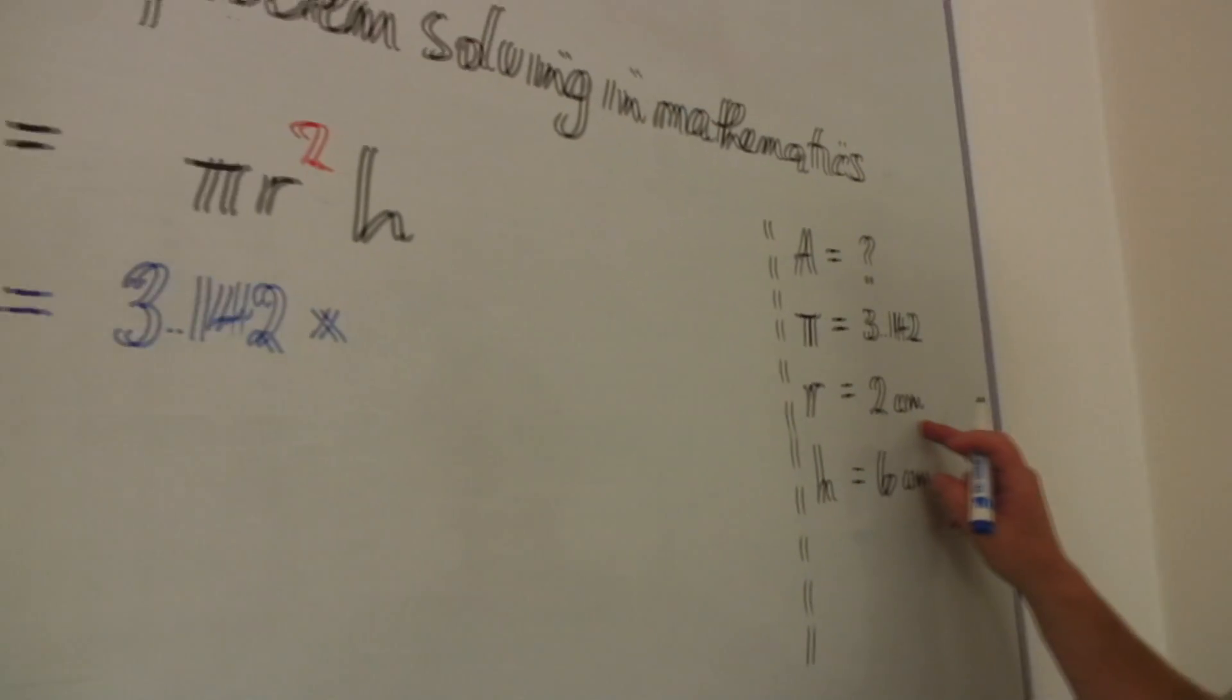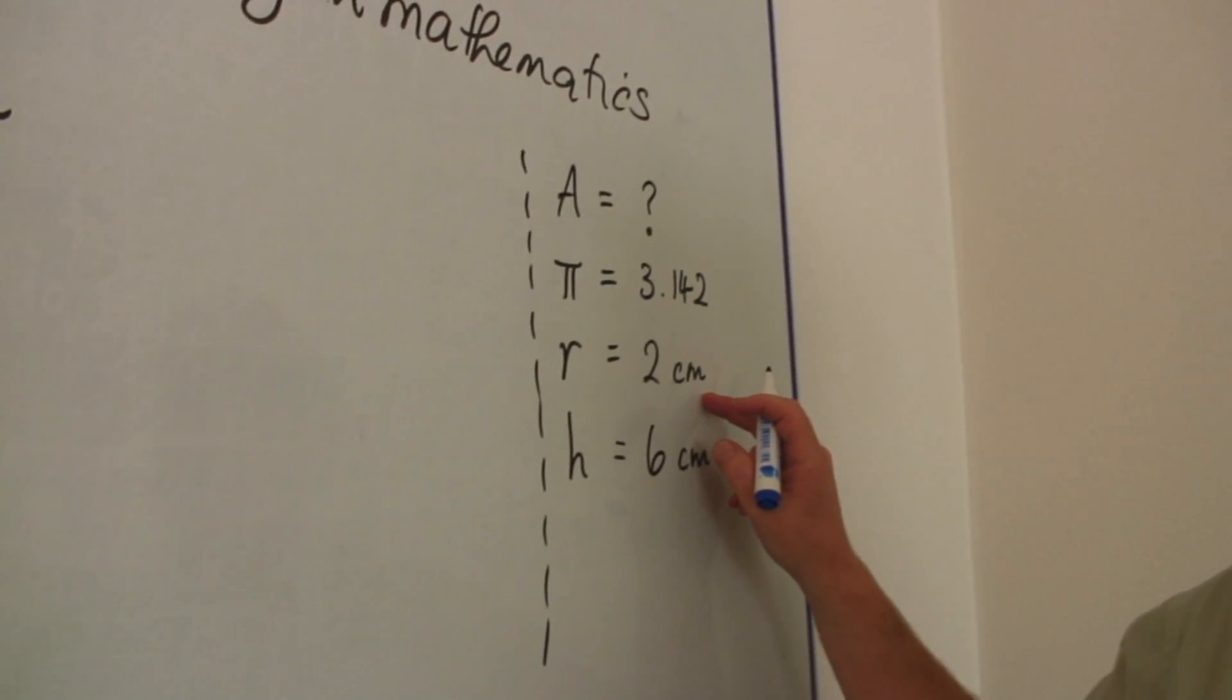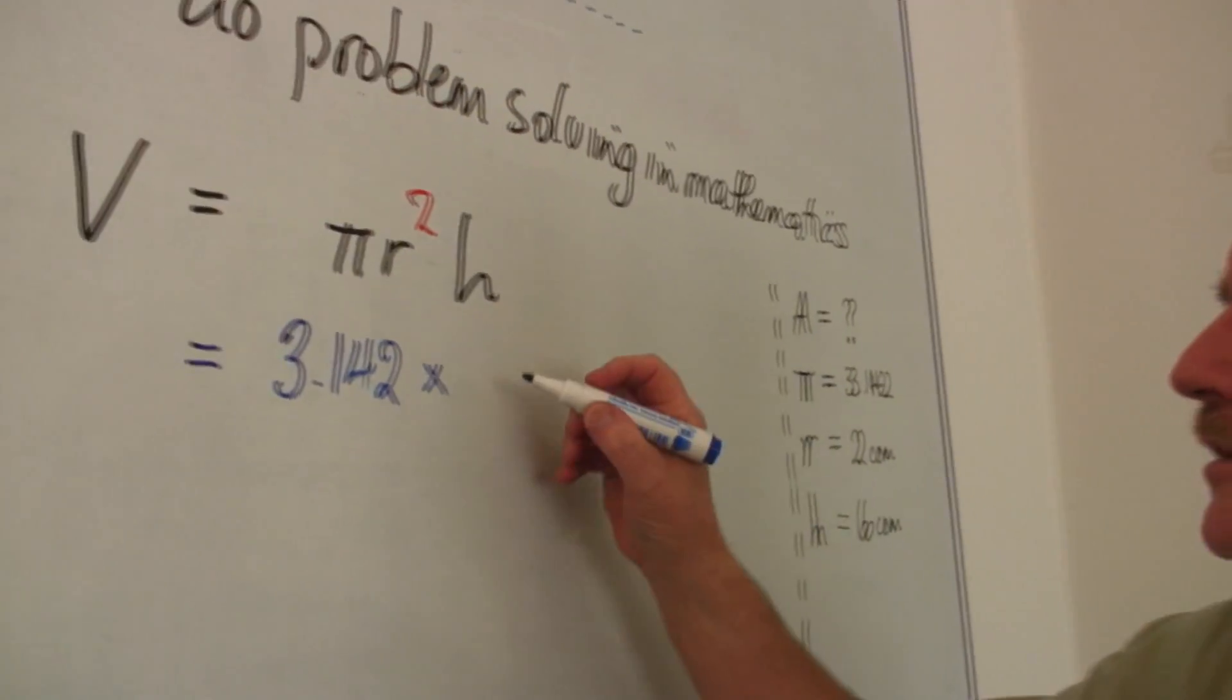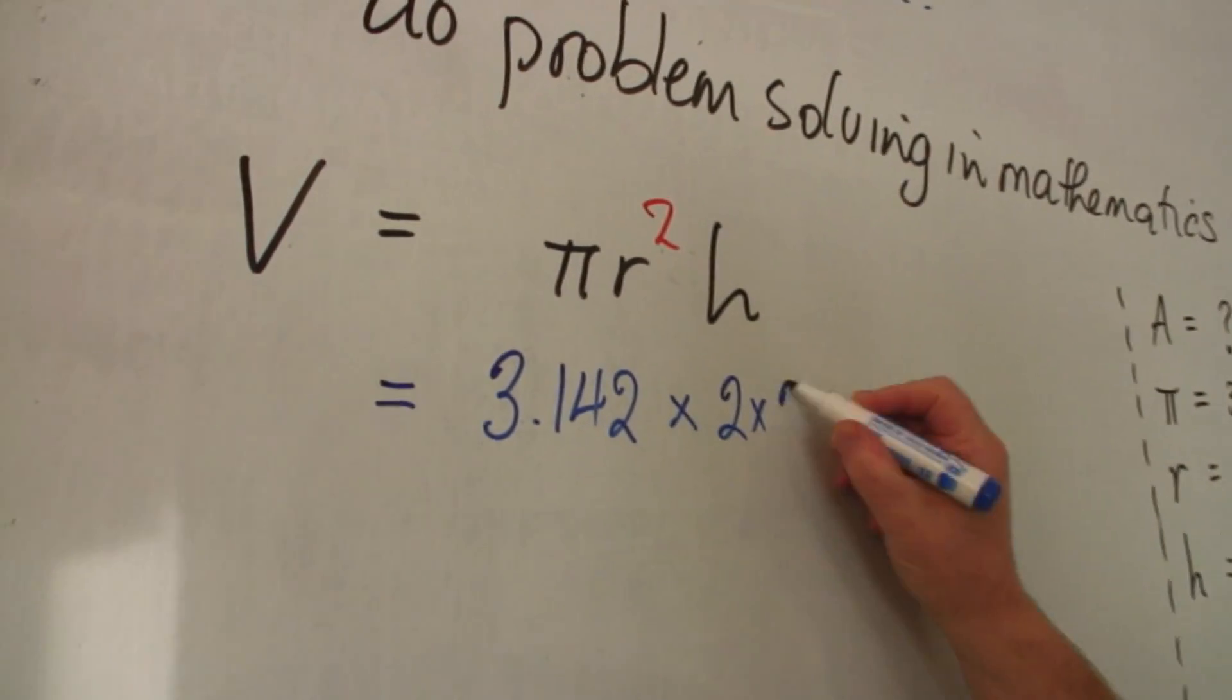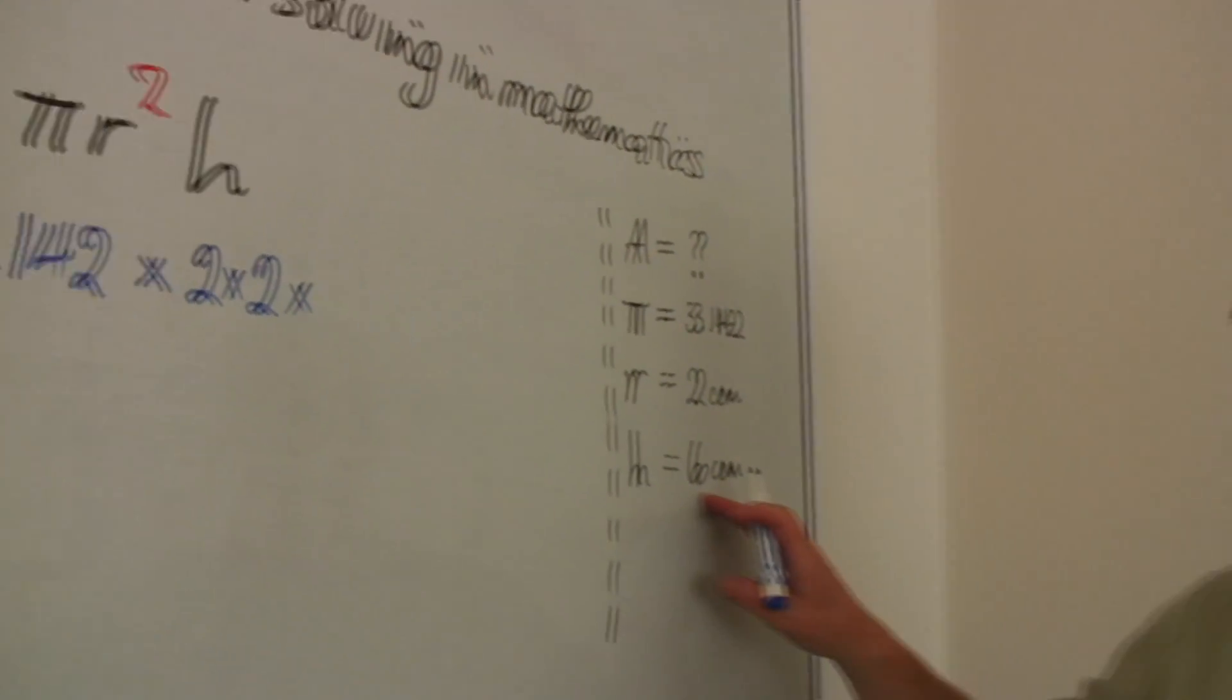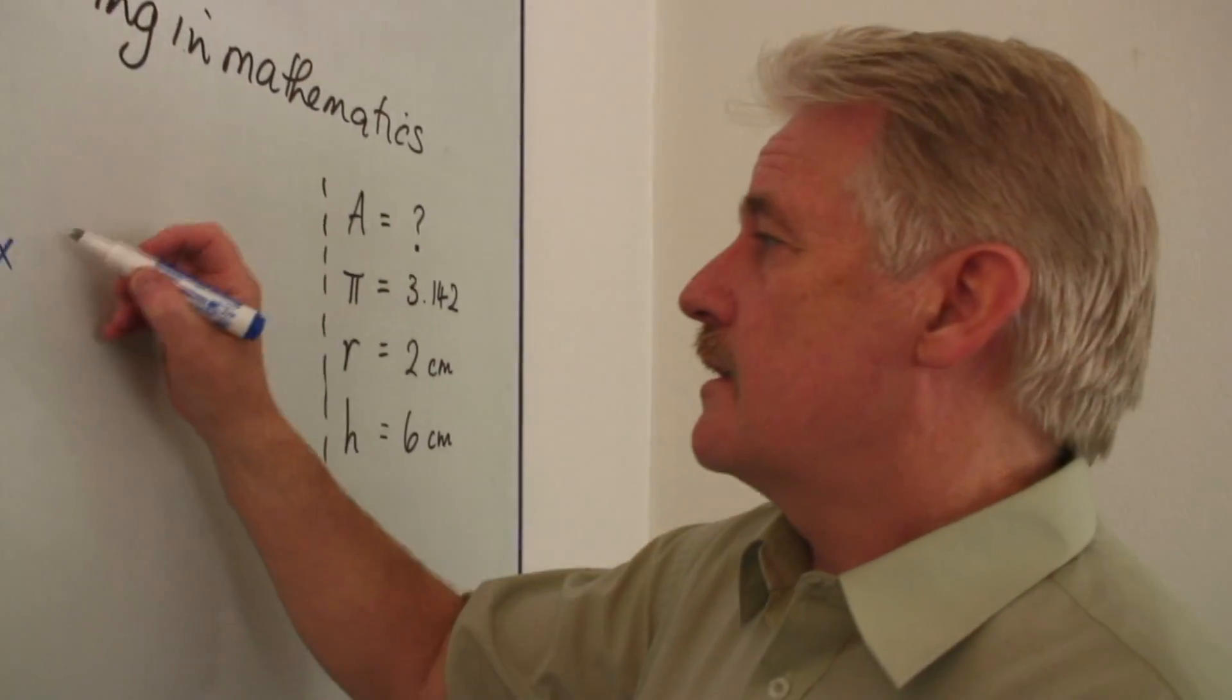Well, r squared we know is r times r, and it would be very tempting to just write here 4. But I'm tempted to write 2 by 2, 2 times 2. And then write h, the 6.